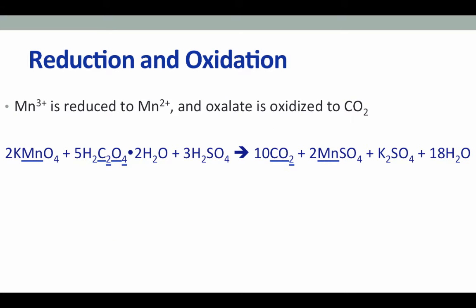In today's titration, you'll be looking at the reduction of the manganese cation. In potassium permanganate, manganese exists in its 3-plus transition state, and through reaction with oxalic acid, it is reduced to manganese in its 2-plus oxidation state. The electrons donated to this manganese come from oxalic acid, so the oxalate anion of oxalic acid is being oxidized to carbon dioxide. This is an excellent reaction for titration because the 3-plus transition state of manganese is a dark purple color, whereas the 2-plus transition state is colorless, so we can use this natural color change to determine when our reaction is completed.